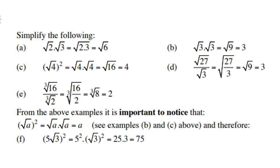Look at (b): square root of 3 times square root of 3 is square root of 9, which is 3. Take note: square root of 3 times square root of 3 equals 3. Then square root of 4 squared means square root of 4 times square root of 4, which is square root of 16, which is 4. So again take note: square root of 4 times square root of 4 is 4.